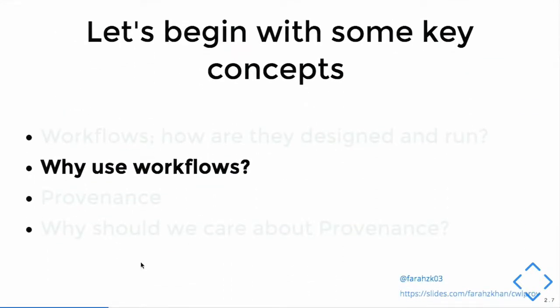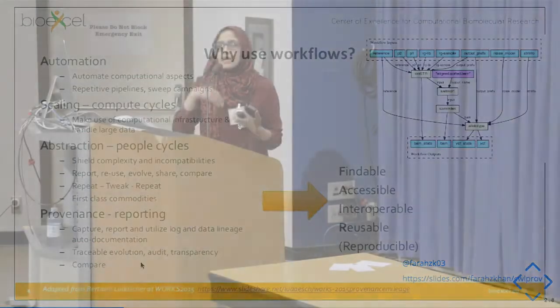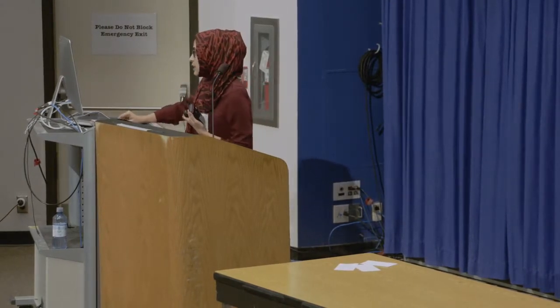Why are we using workflows? Old scripts were fine — why workflows? This slide, adapted from my co-author Steen's presentation, shows four basic properties that a workflow can provide but independent steps cannot: automation, scaling, abstraction, and provenance. Each of these topics is so vast you could spend another 15 minutes on each. What we are interested in today is that if you are using workflows, you should be able to track provenance and provide that to your user. So we are talking about provenance reporting today.